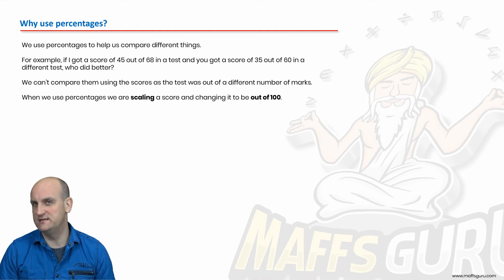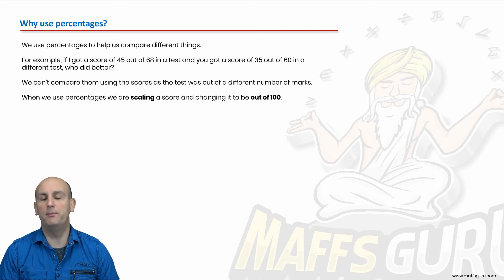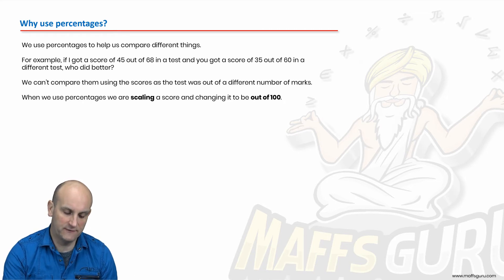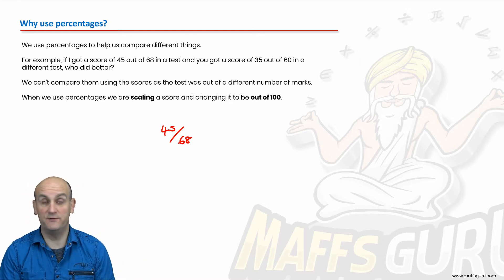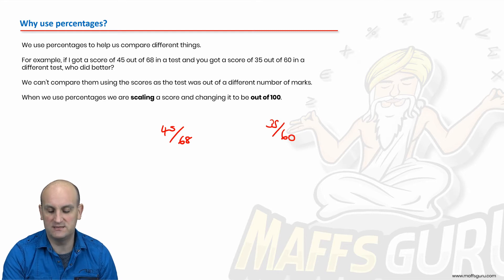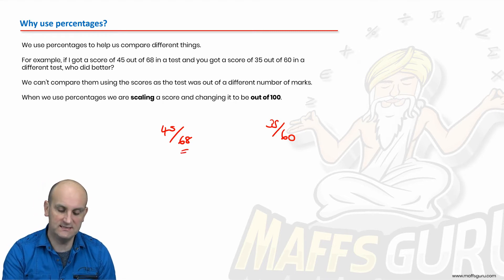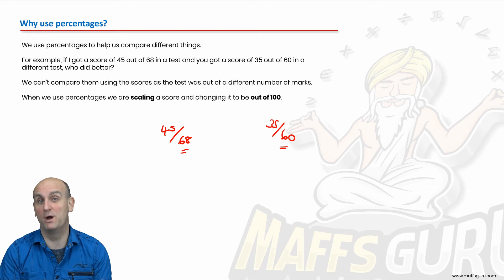But why do we use percentages? What is a percentage? Well, you get 20% on an exam and I'm sure you probably won't want to ask your parents for anything for Christmas. But the point of it is, percentages allow us to compare stuff. For example, if I got a score of 45 out of 68 on a test, you would want to know what that is as a percentage. Why? Because maybe someone else got a score of 35 out of 60 on a different test and we were trying to use these two as a decider on who was the most intelligent. At the moment, we can't tell. One test is out of 68, one test is out of 60. If they were both out of the same thing, then we would make some sort of comparison.